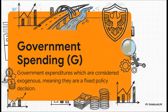Our third player is government spending, or G. This is pretty much what it sounds like — everything the government buys and provides, from building highways and bridges to funding the military. For our purposes here, we treat this as a fixed amount. It's a policy decision made by lawmakers, kind of outside the day-to-day economic forces we're looking at.